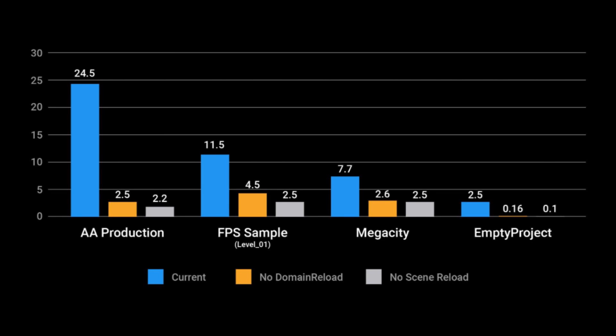Here's a nice graph representing the seconds it took for the Unity editor to enter play mode — smaller numbers are obviously better. The gray fields represent no scene reload, which is the new system, whereas blue is the current system. On an AA production project, it took 24.5 seconds with the current system, and only 2.2 seconds without scene reloading — which is insane. FPS Sample, Mega City, and an empty project all show massive differences as well.